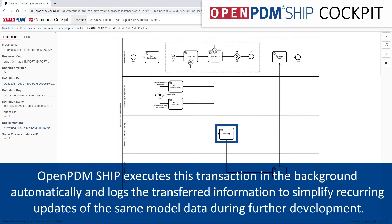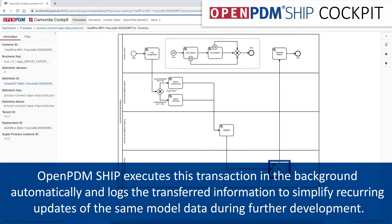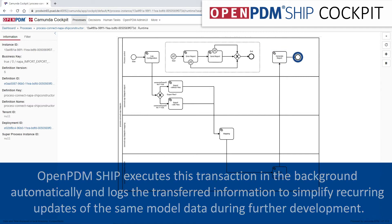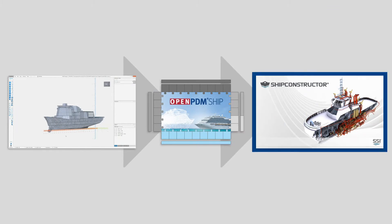OpenPDM SHIP ensures this transaction is automatically processed in the background, while we can track its progress in the OpenPDM SHIP process cockpit. The system logs the transferred information to allow tracing the history of transactions and to simplify recurring updates of the same model information as it evolves.